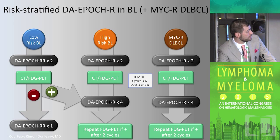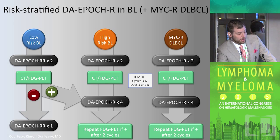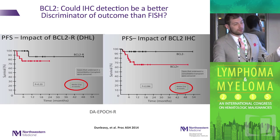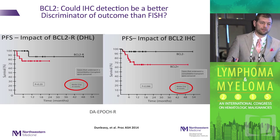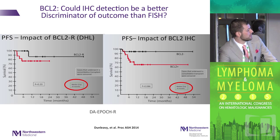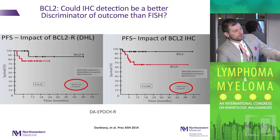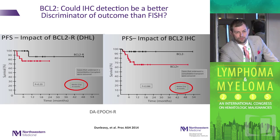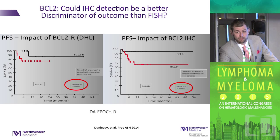Circling back to the NCI study, this is a prospective experience with MYC-rearranged patients irrespective of whether they have a second hit. Whether you look at BCL2 by IHC or FISH, it seems to confer a negative impact when all patients have MYC rearrangements. Could BCL2 by IHC be an even better discriminator of poor outcome? I don't think that's the case based on this experience with short follow-up, but it might be important to recognize patients who have BCL2 overexpression by IHC, not simply by FISH.